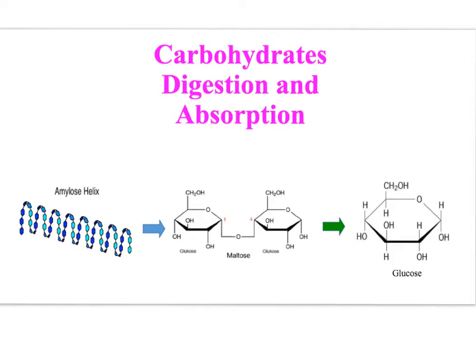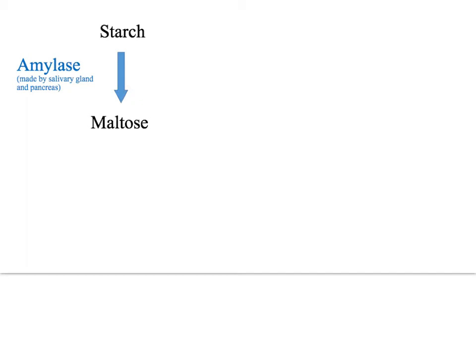Generally, a three-step process starts with amylose, which is one form of starch, digested to maltose, which is digested to glucose. Glucose is then absorbed into the blood, so we break it down.